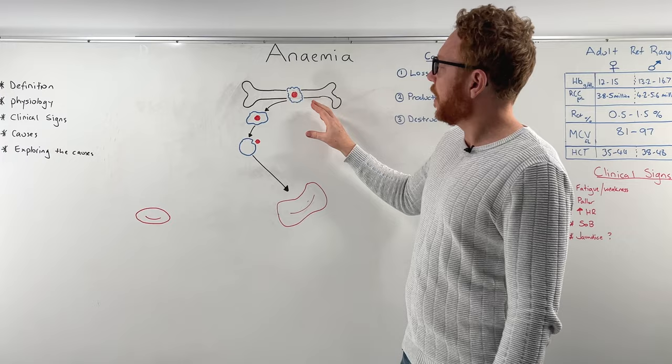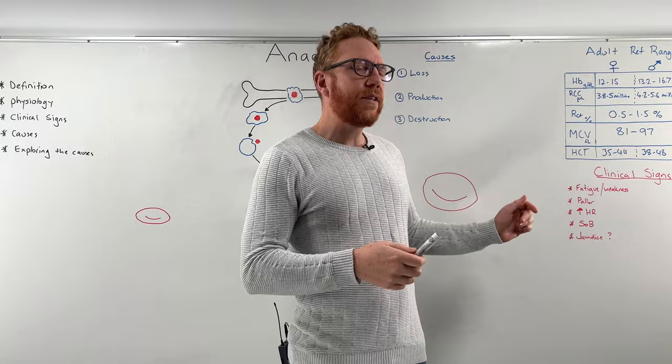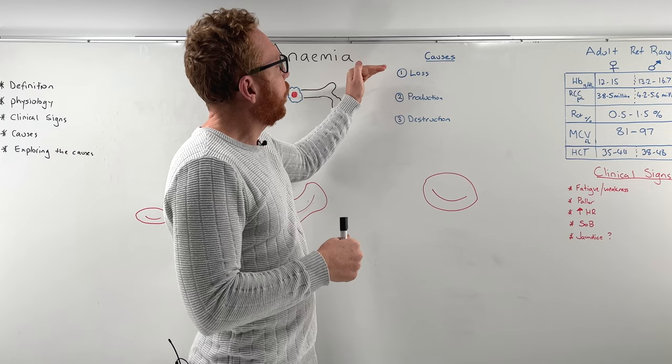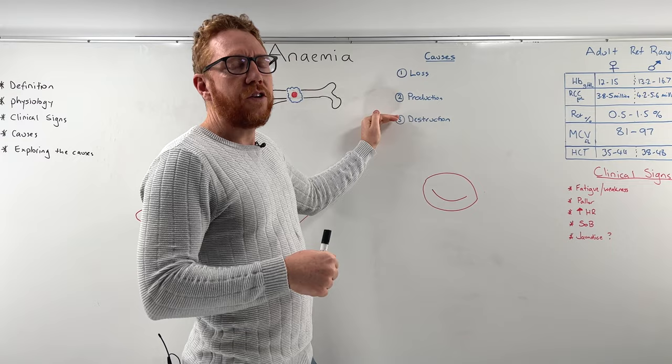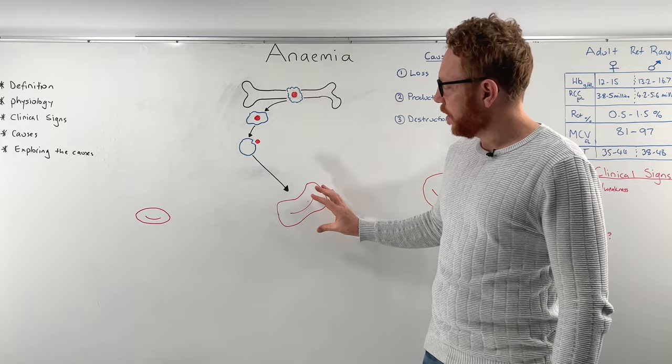The physiology — we'll basically go back to how red blood cells are produced and how they then mature and go into the blood. Clinical signs, so how typically in the clinical setting would you see anemia presenting. Then we'll have a look at the common causes, categorizing anemia into three main causes: loss, production, and destruction issues. And finally, exploring how we find what is actually causing the main problem, which we can do through the size of the red blood cell.